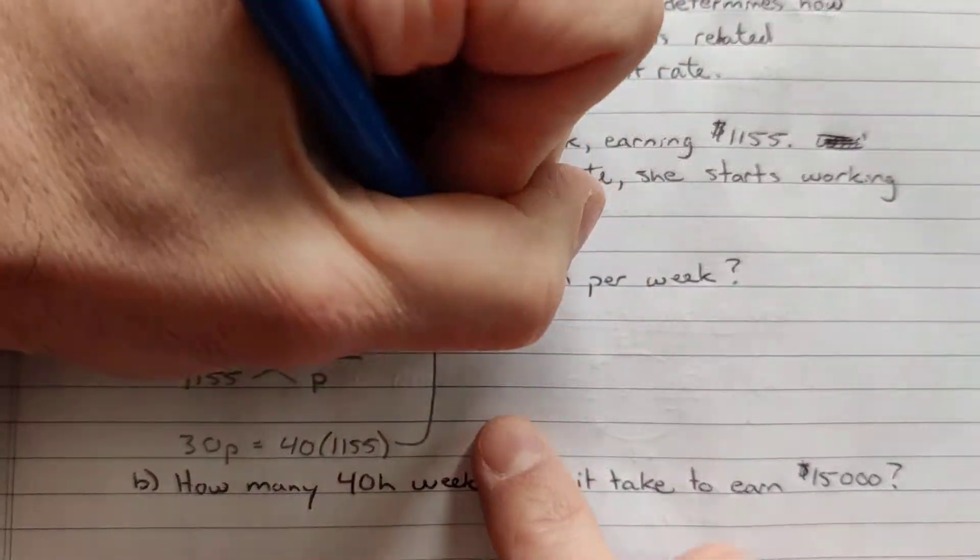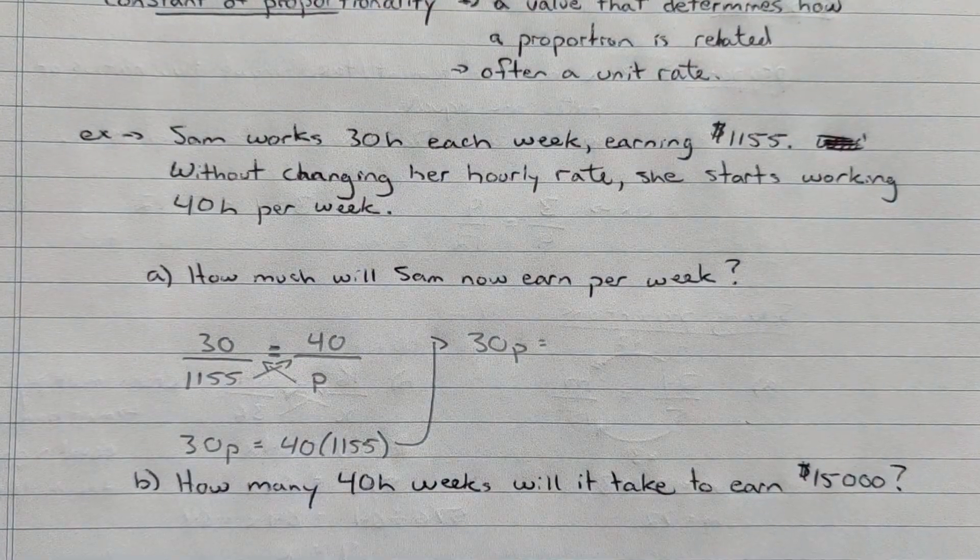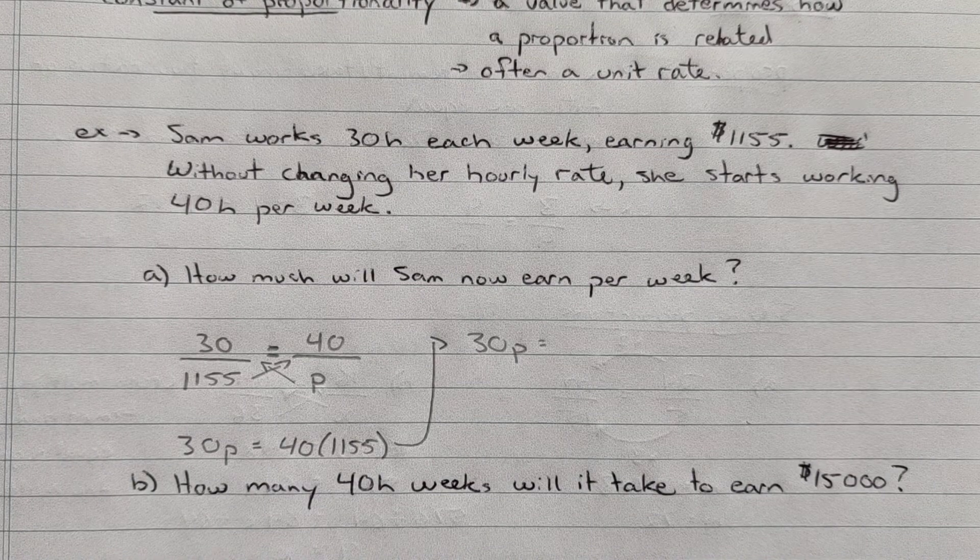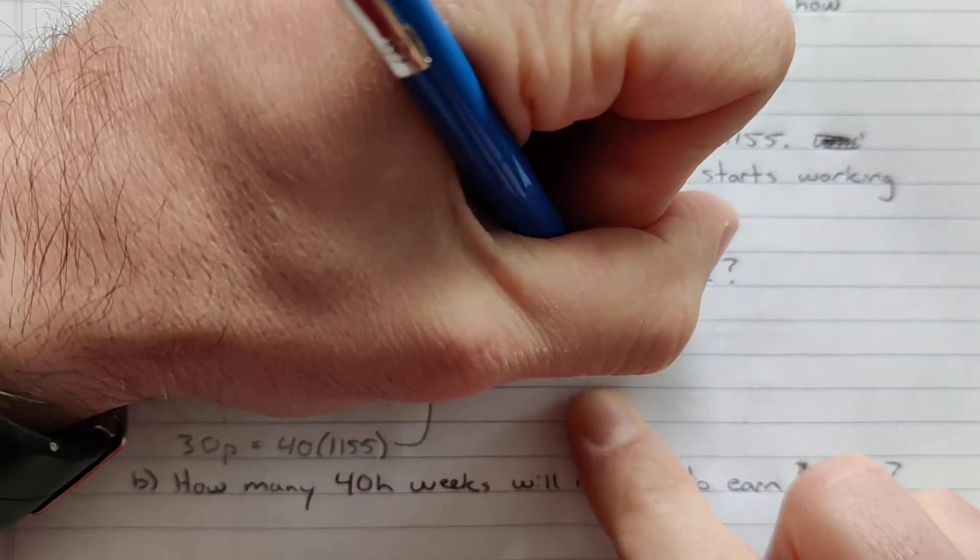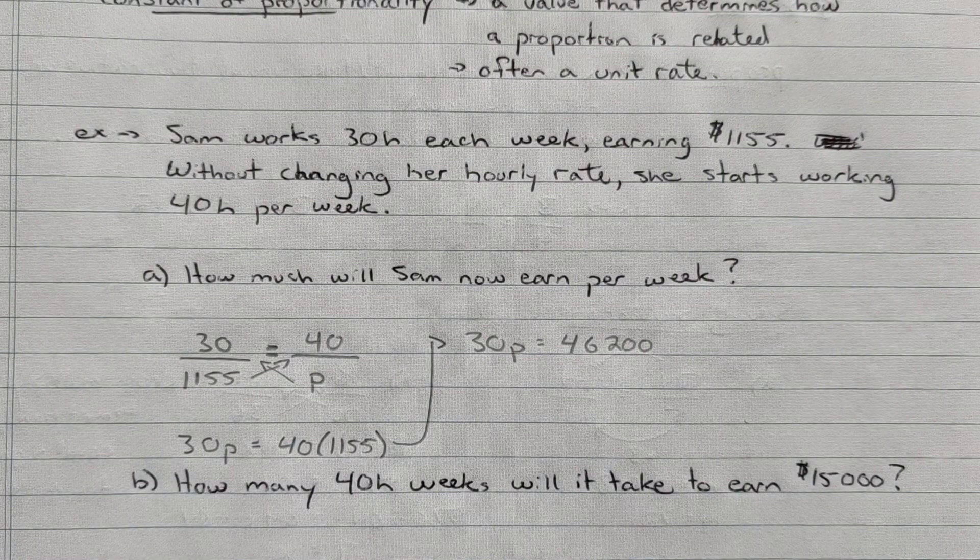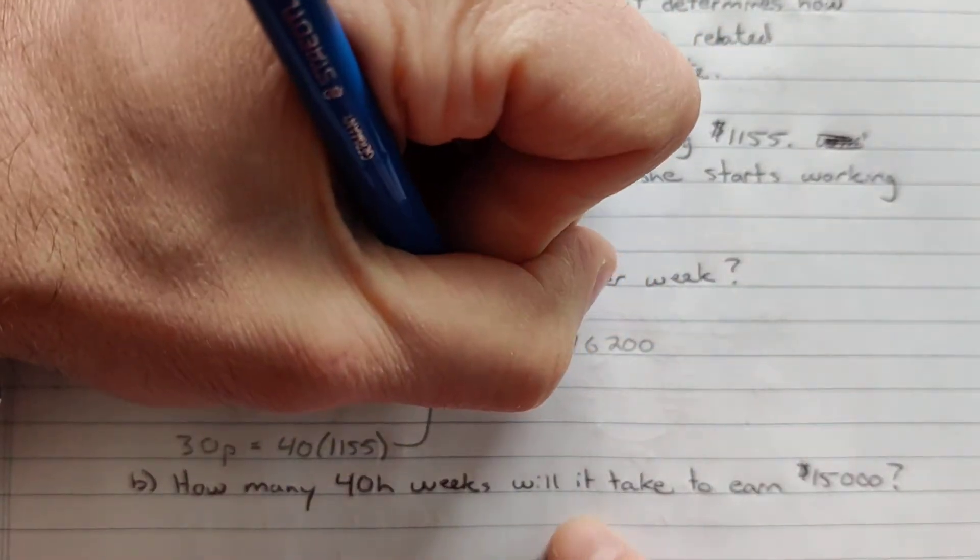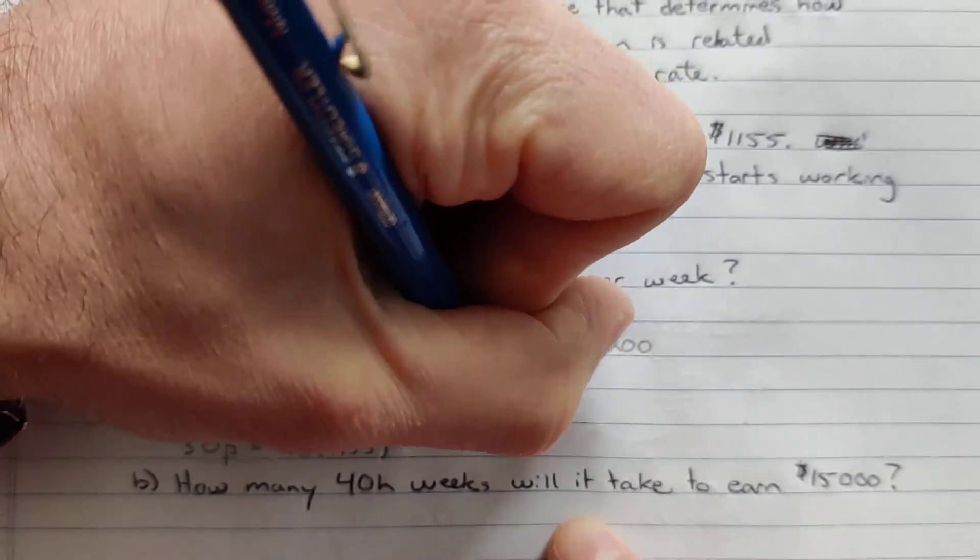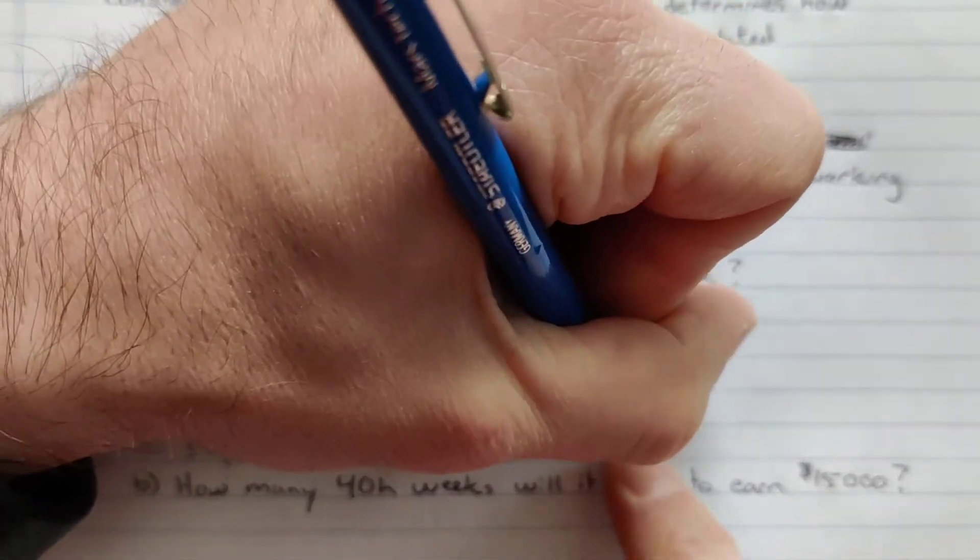So I got 30P equals 40 times 1,155. That's going to give me $46,200. And now the last step is just to divide both sides by 30. So 30P over 30 equals 46,200 divided by 30. This is going to give me my P. Those cancel to get the P. And then we have 46,200 divided by 30 and that's going to give us 1,540.